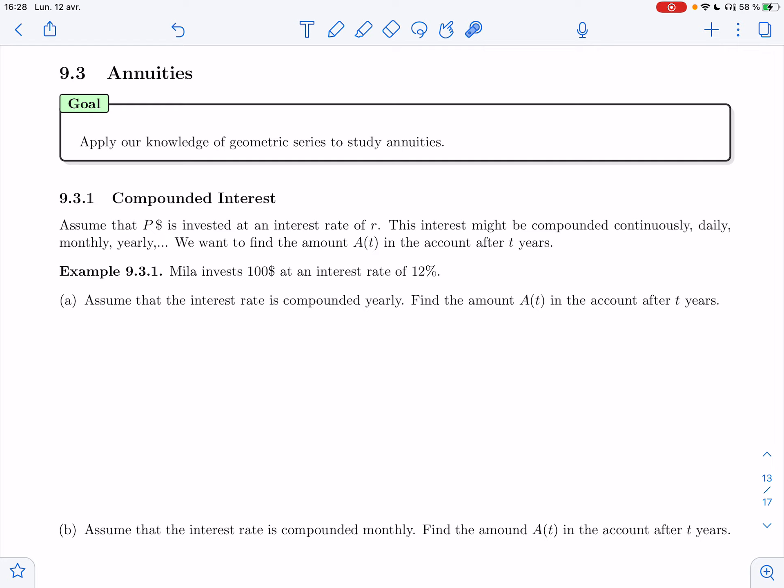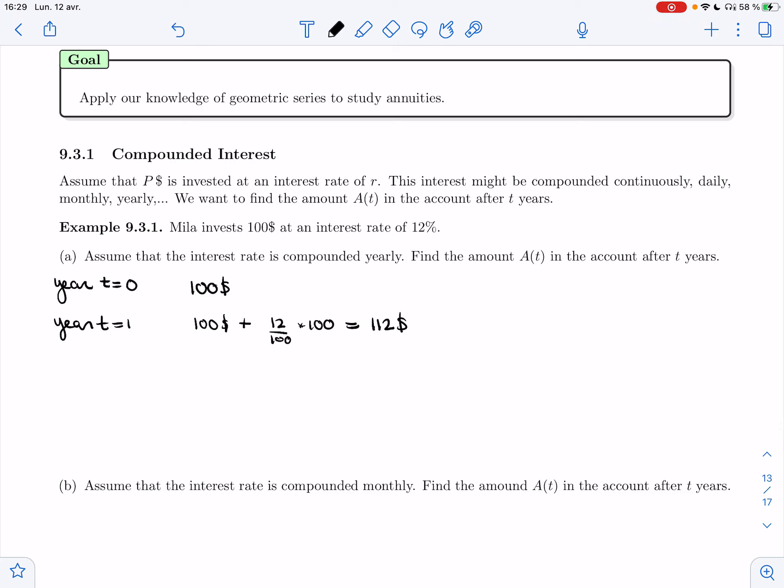So let's do an example to see and then we'll have the formula. Example 9.3.1. Assume that Mila invests $100 at an interest rate of 12%. Assume that the interest rate is compounded yearly. So find the amount A(t) in the account after t years. So yearly means that once a year the bank looks at Mila's account and gives her 12% on what's already there. So at year 0 she would have $100. At year 1 she would get $100 that she had plus 12% interest, so 12% times 100, that's $112.